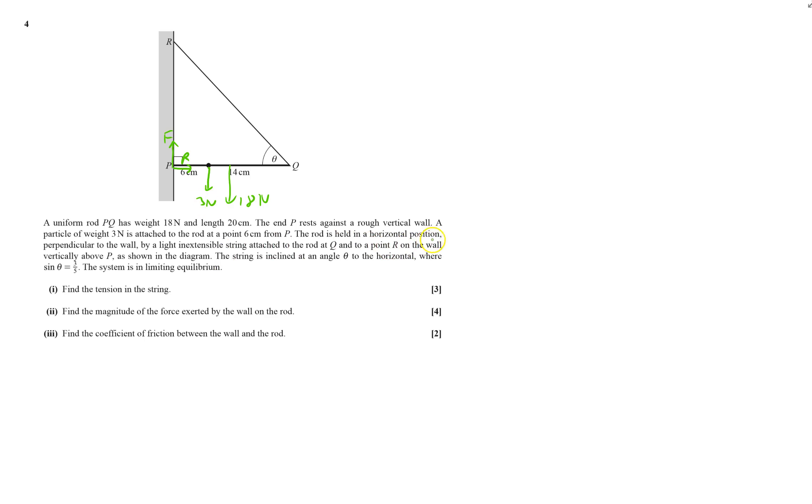The rod is held in a horizontal position by a light inextensible string attached to Q, so that will have tension going up there. Sin theta equals three-fifths, which shows me that cos theta is four-fifths, a 3-4-5 triangle.